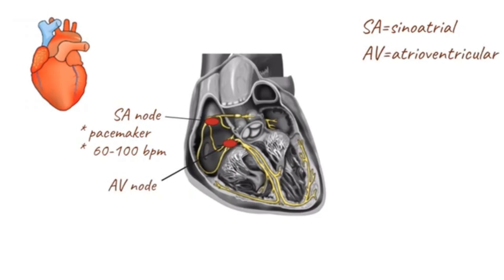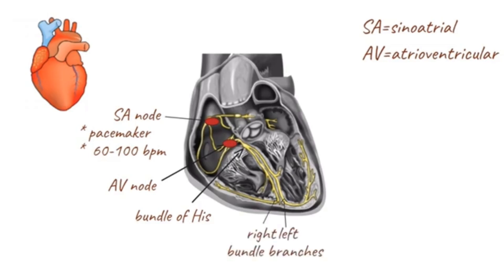At the AV node, the impulse is briefly slowed before continuing down the conduction pathway to the bundle of His. The bundle of His divides into the left and right bundle branches, and finally into the Purkinje fibers, which in turn stimulate ventricular contraction.